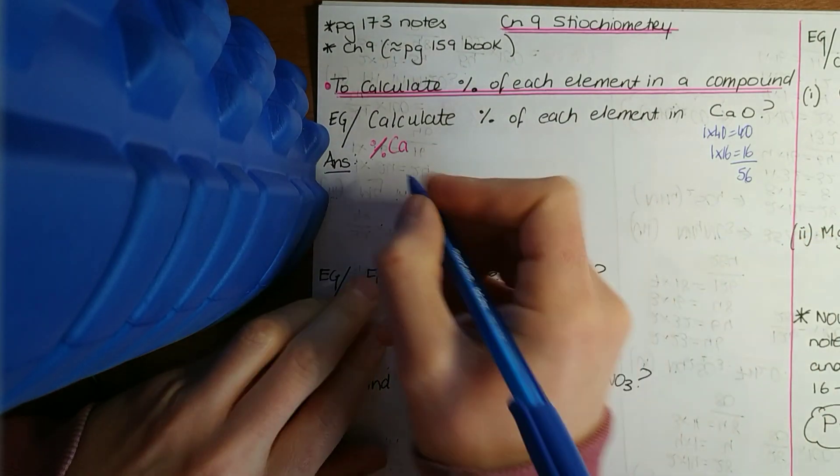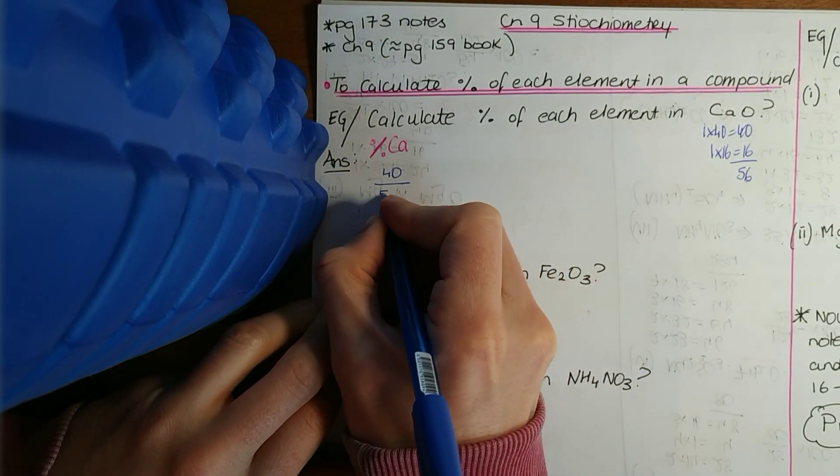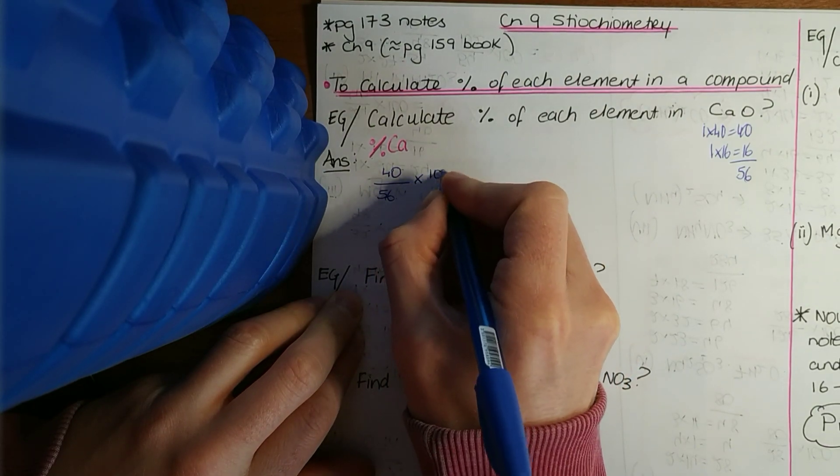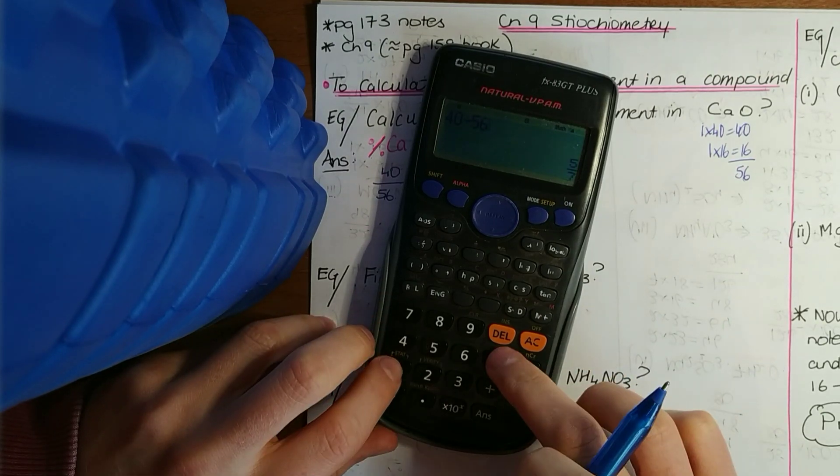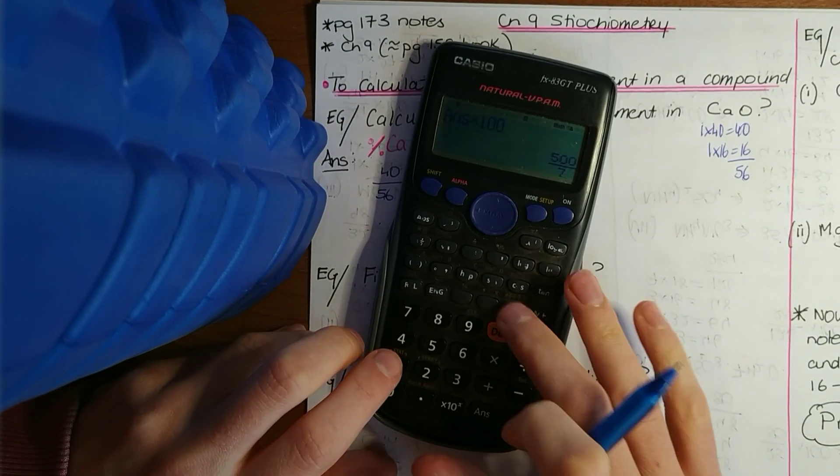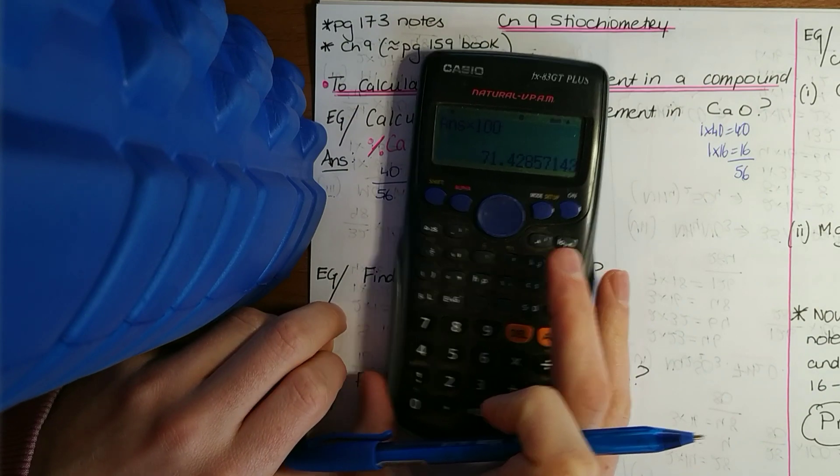So the percentage of calcium in it is 40, the mass of calcium over 56, and to make anything a percent, times it by 100. So if we throw that in our calculator: 40 divided by 56 multiplied by 100, we get 71.43 percent.